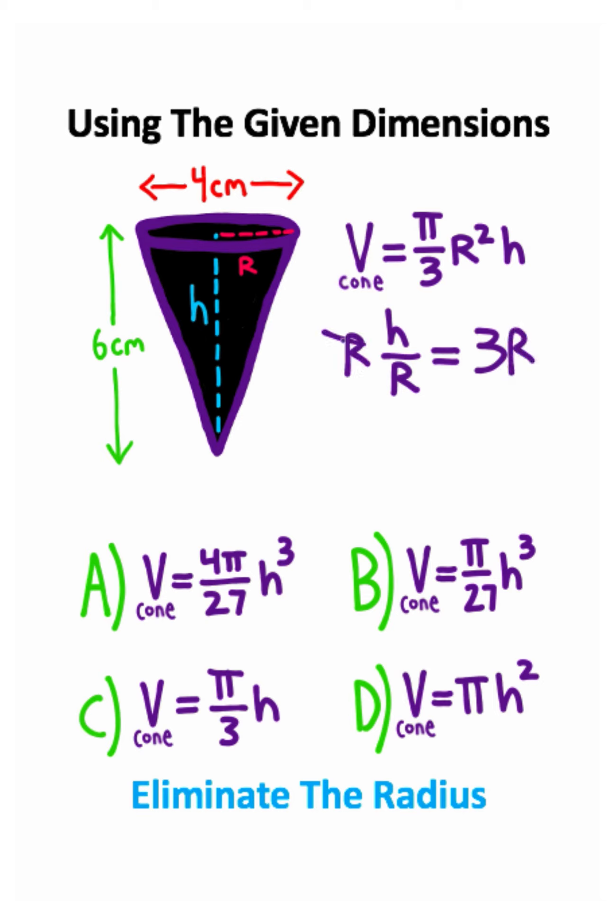So I'll multiply the r on both sides, that'll get it to cancel on the left, and then I'll divide 3 on both sides, that'll get the 3 to cancel on the right. So I have r is equal to h over 3, and I can take this h over 3 and plug it in for r in the original equation.